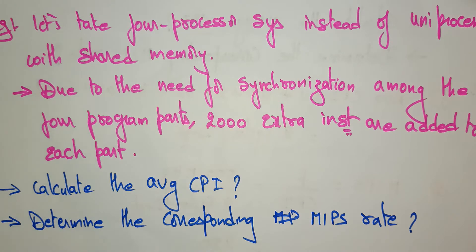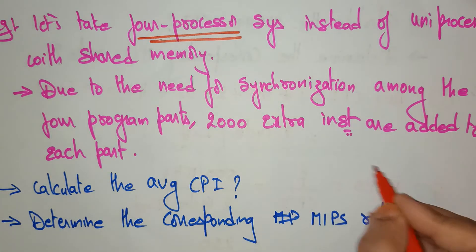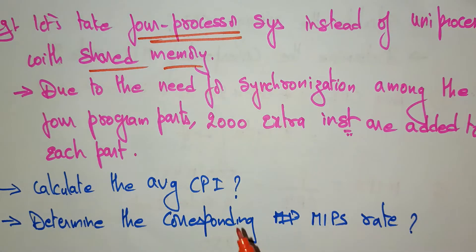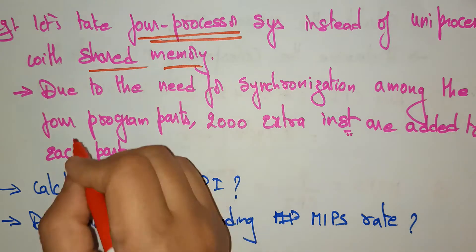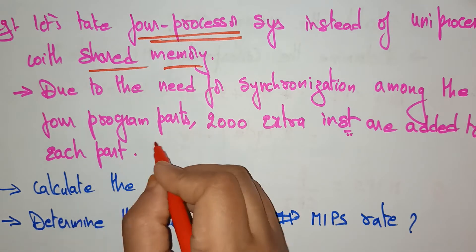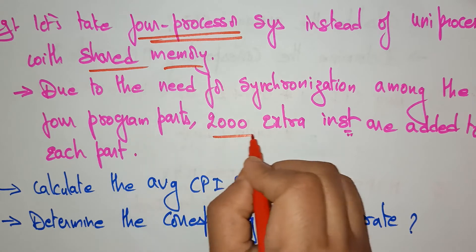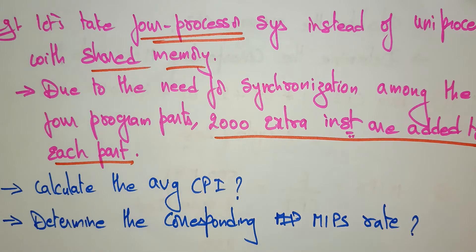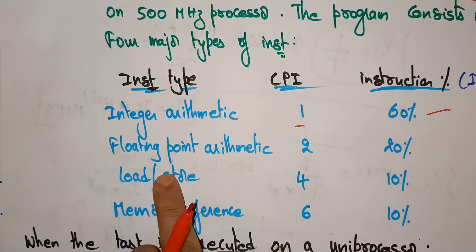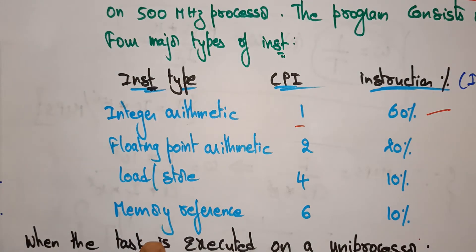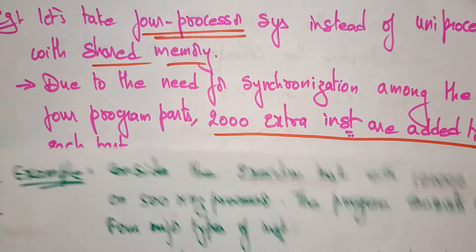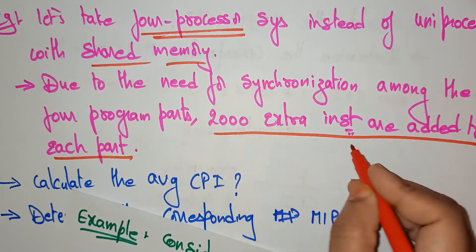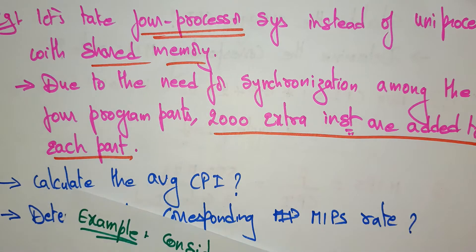Here, instead of a uniprocessor, I am taking a 4-processor system with shared memory. Due to the need for synchronization among the 4 program parts, 200 extra instructions are added to each part. The parts cover integer arithmetic, floating point arithmetic, load/store, and memory reference. So for each instruction type, 200 extra instructions are added.